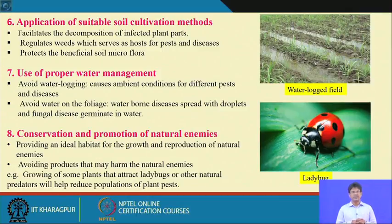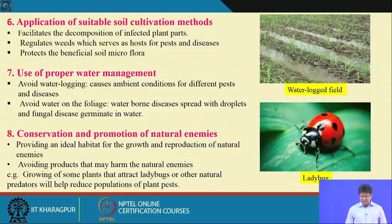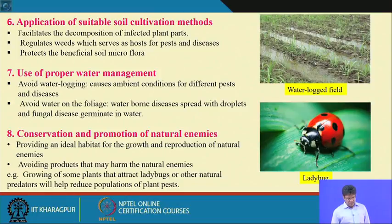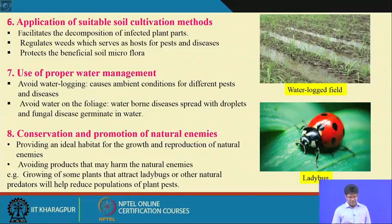Number 7 is conservation and promotion of natural enemies. By doing organic farming and avoiding products that harm natural enemies, we provide ideal habitat for their growth and reproduction. Growing plants that attract ladybugs and other natural predators reduces plant pest populations. Releasing biological agents like Trichoderma viride in the field can also destroy many harmful pathogens.